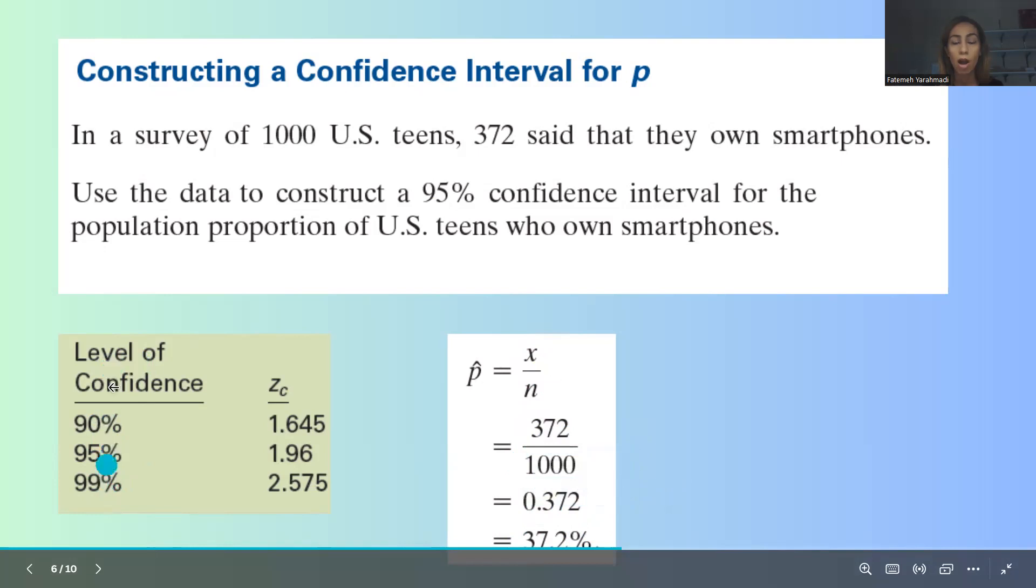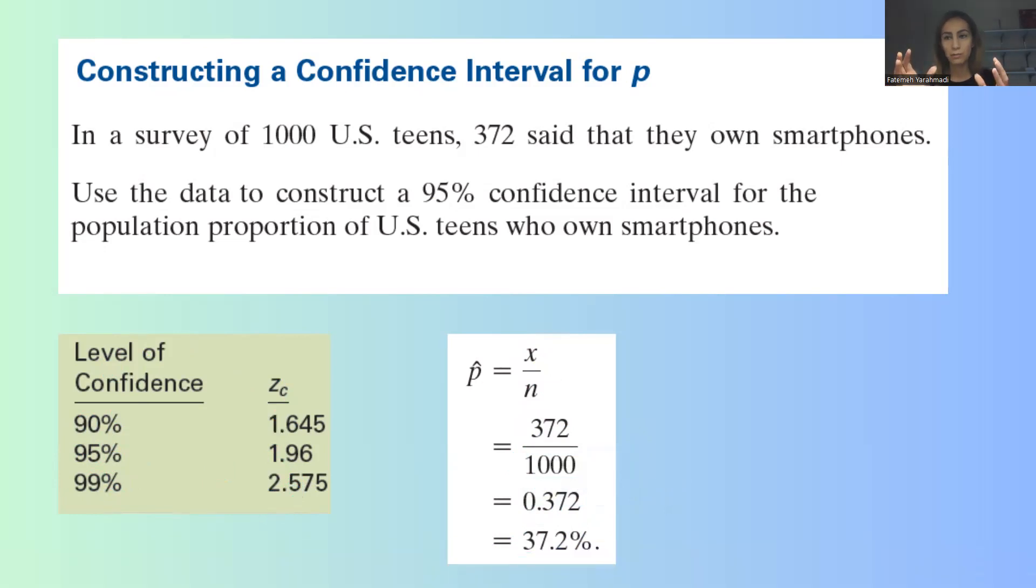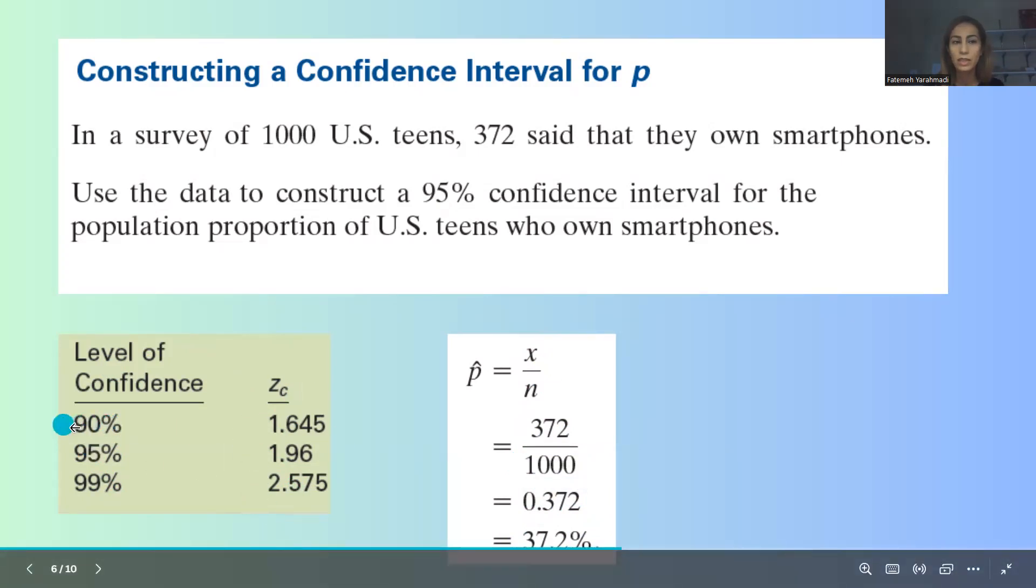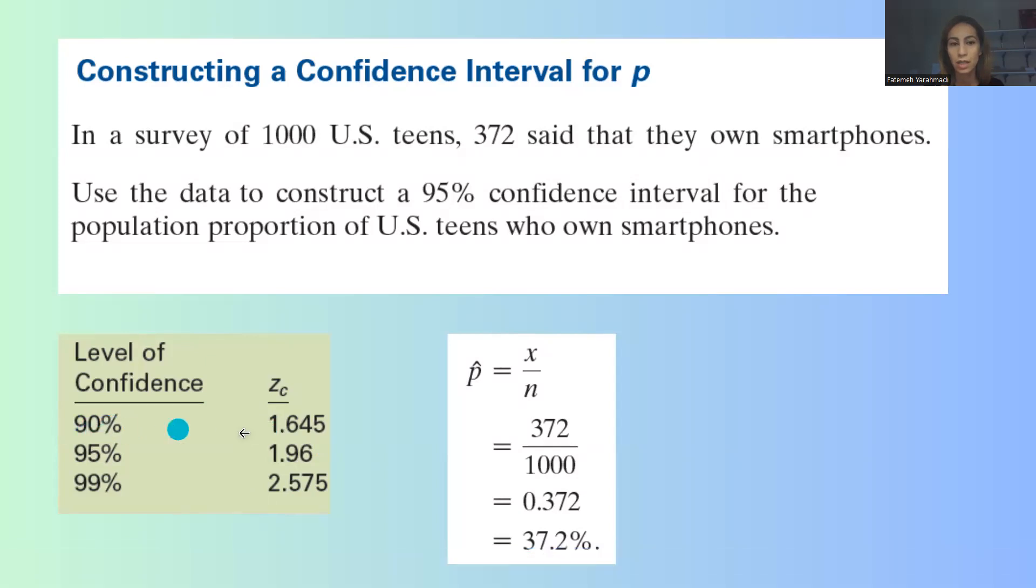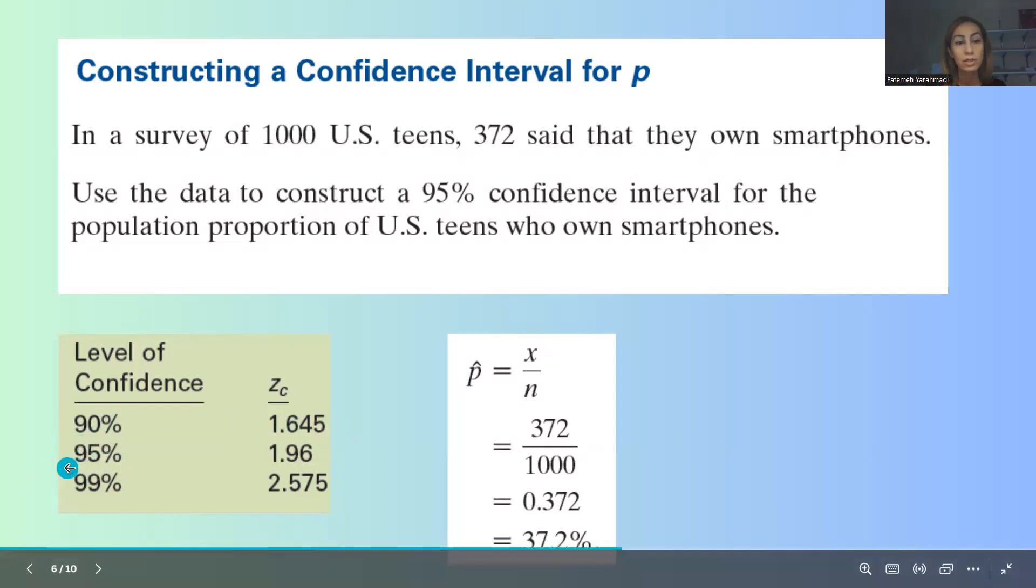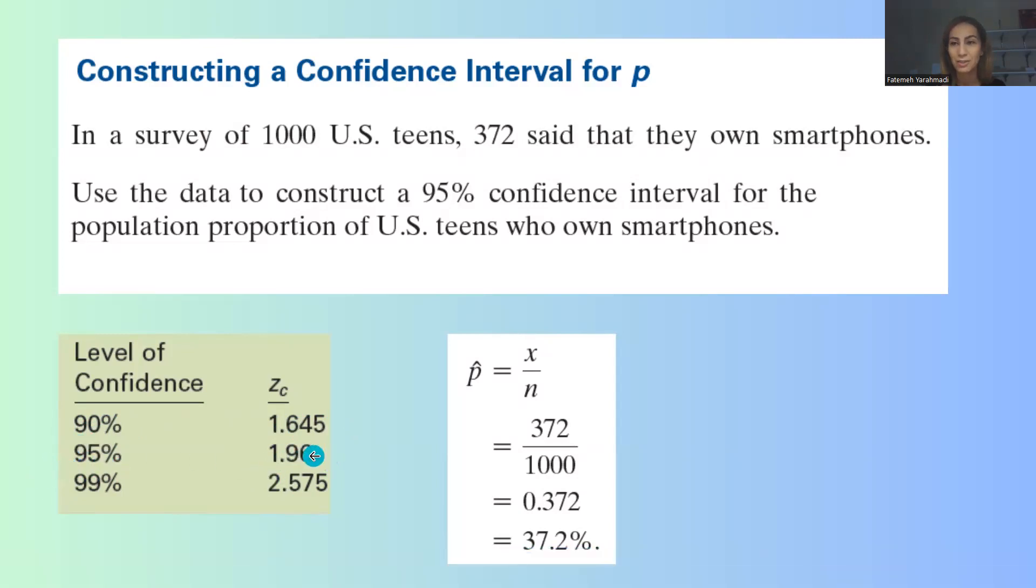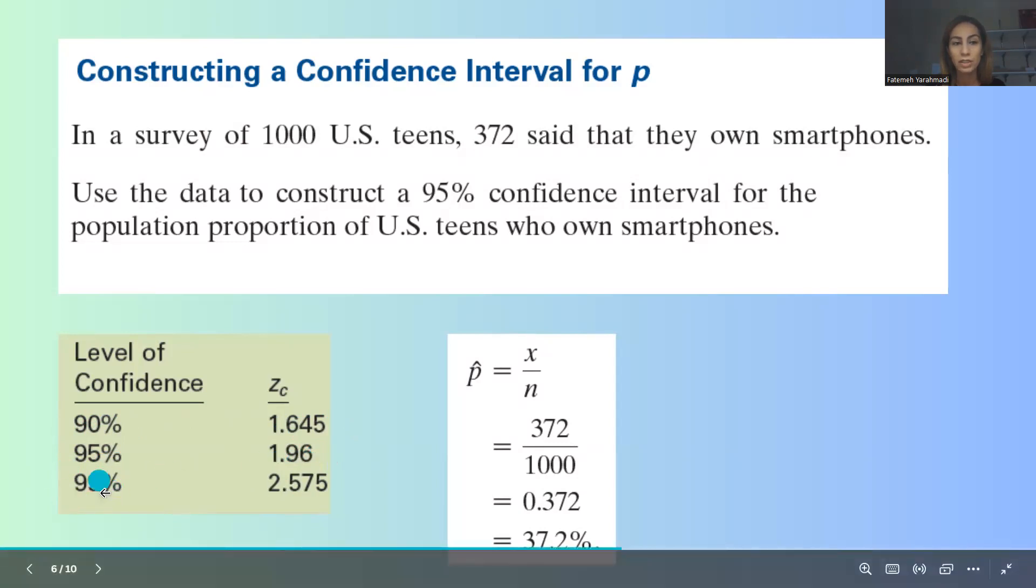And finally, for different levels of confidence, we have critical values that we learned in previous chapters. If you have the area, we can use inverse norm to find z-score. So if the area is 90%, the z-score assigned to it is 1.645. Some students tend to memorize these numbers. If the confidence level is 95%, the critical value is 1.96. If the confidence level is 99%, the critical value is 2.575.